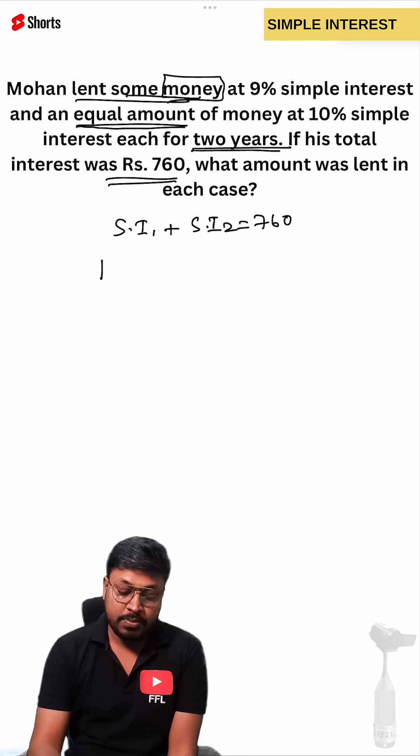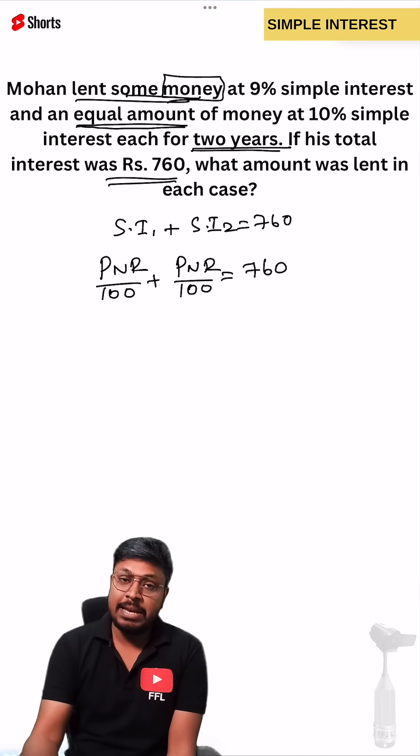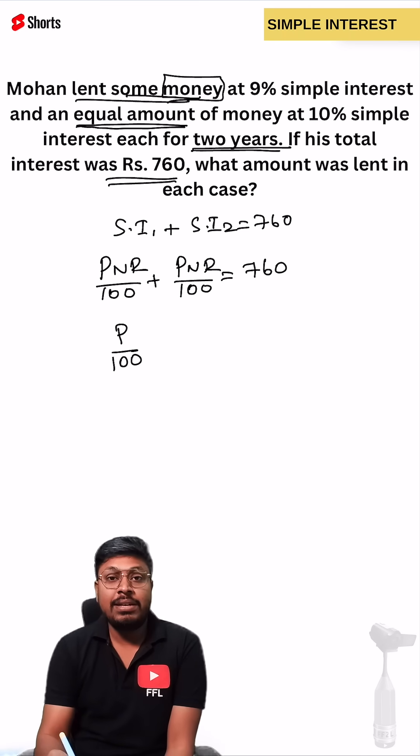We know the simple interest formula: PNR divided by 100. So PNR/100 plus PNR/100 equals 760. Since the principle is the same in both cases, we can take P outside, divided by 100 outside, as well as N, the number of years.